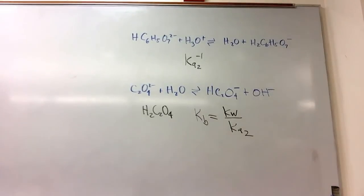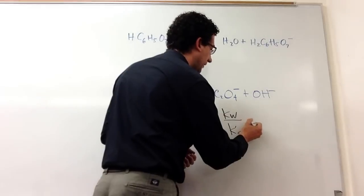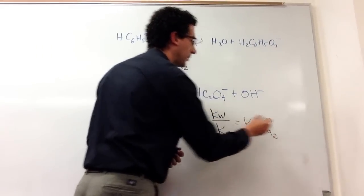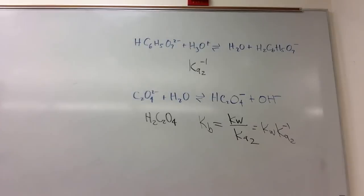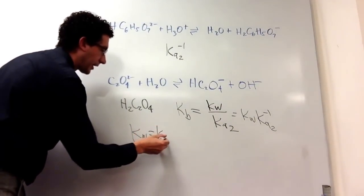Okay. Like, that's why there isn't a, to the negative one, right? Yeah, I mean, really there is a negative one. It's KW times KA2 to the minus one. Yeah. We, and we use the formula, KW equals KA, KB.